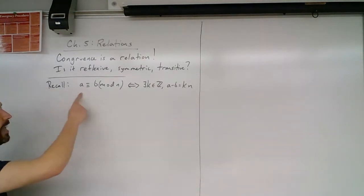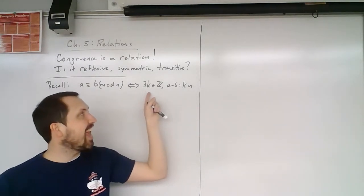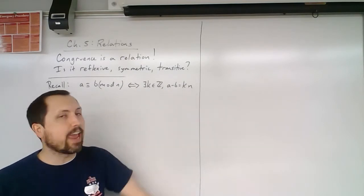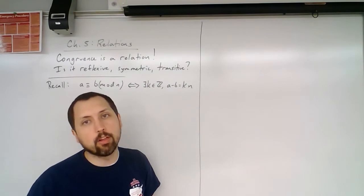We said that a is congruent to b mod n if and only if there exists a k that's in the integers, such that a minus b is equal to k times n. In other words, the difference of a and b is going to be a multiple of n.